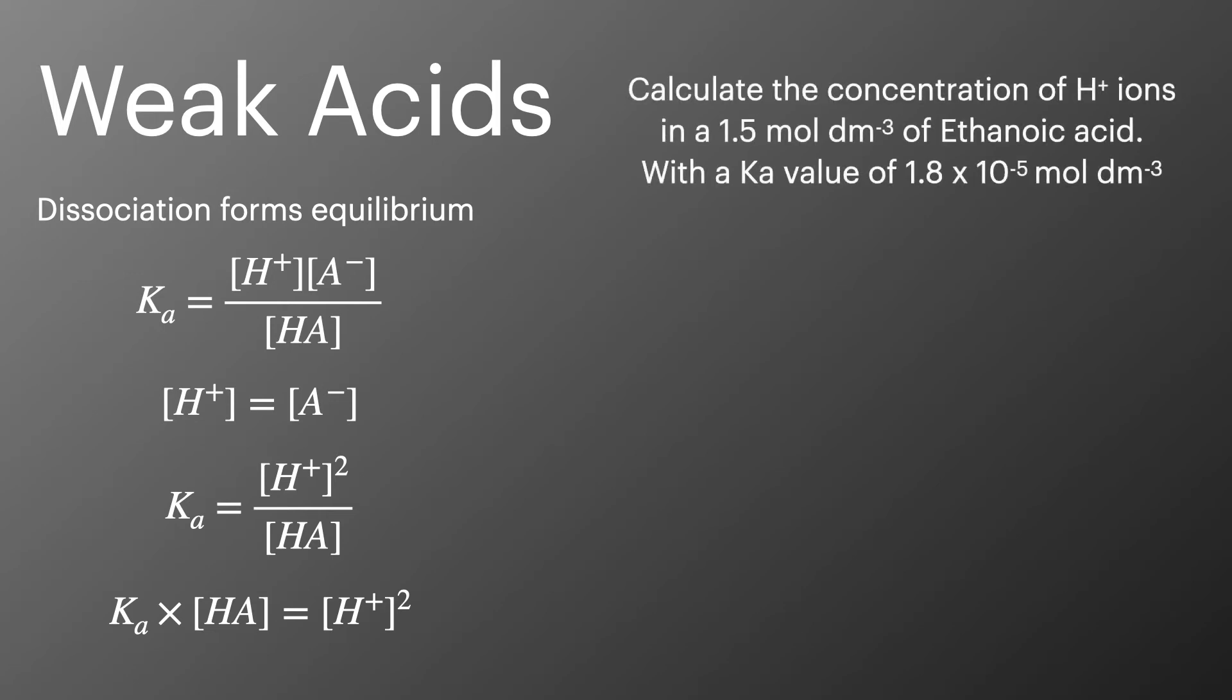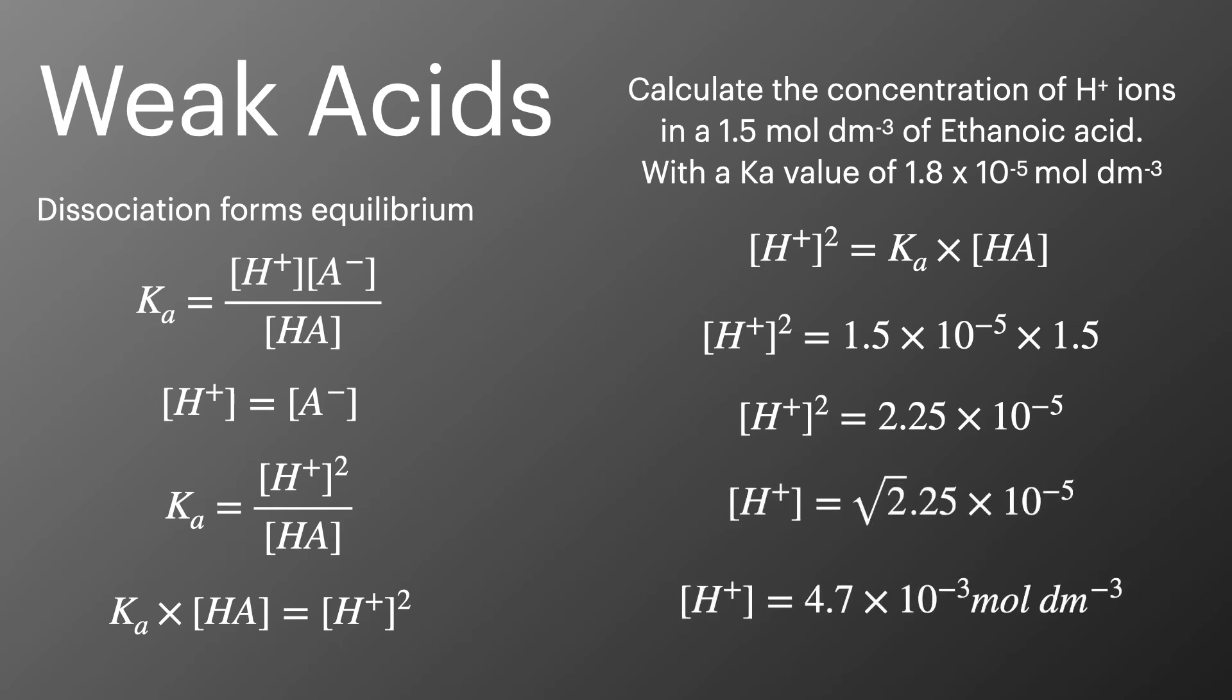If we consider the example of a 1.5 mol per decimetre cubed solution of ethanoic acid with a Ka value of 1.8 times 10 to the minus 5, we can use our rearranged equation and substitute in the numbers to find a value for H+ squared. We can then do the square root to find our final answer.